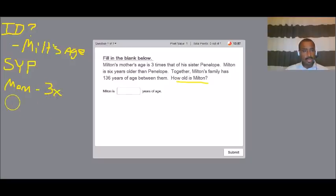And then Milton is six years older than Penelope. So we'll go ahead and abbreviate Milton. And he is six years older than Penelope. So we'll take Penelope's age plus six years would give us Milton's age because he's six years older.